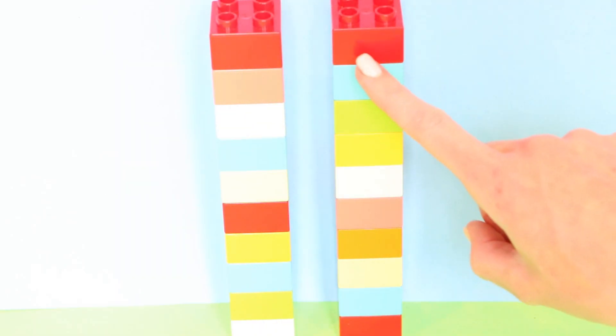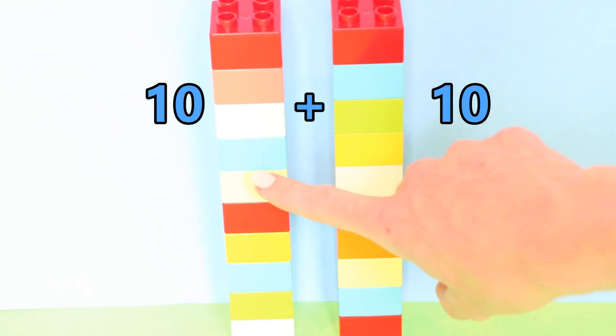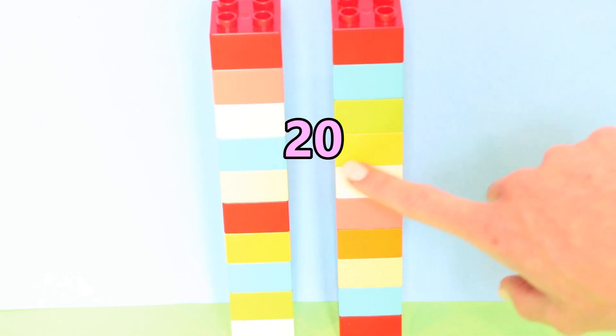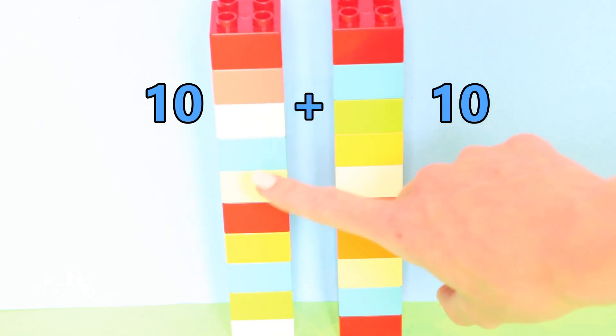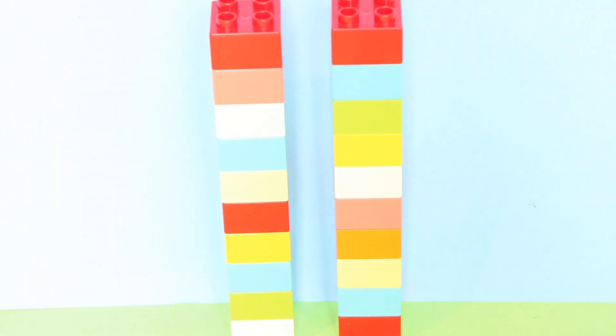And here we have another ten Lego bricks. Ten plus ten equals twenty. Ten plus ten equals twenty.